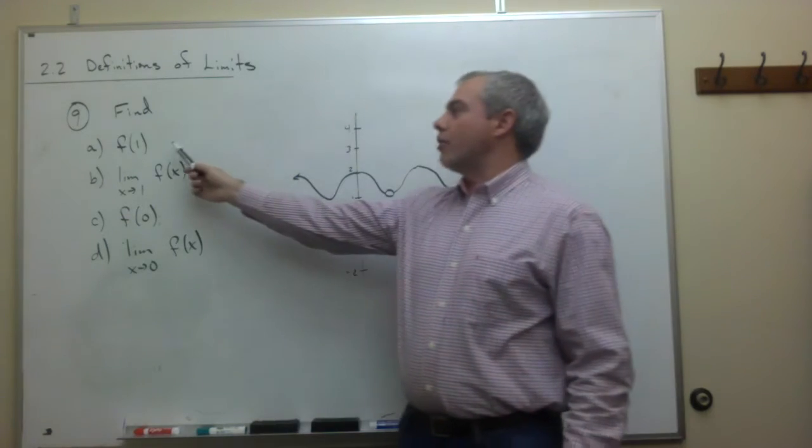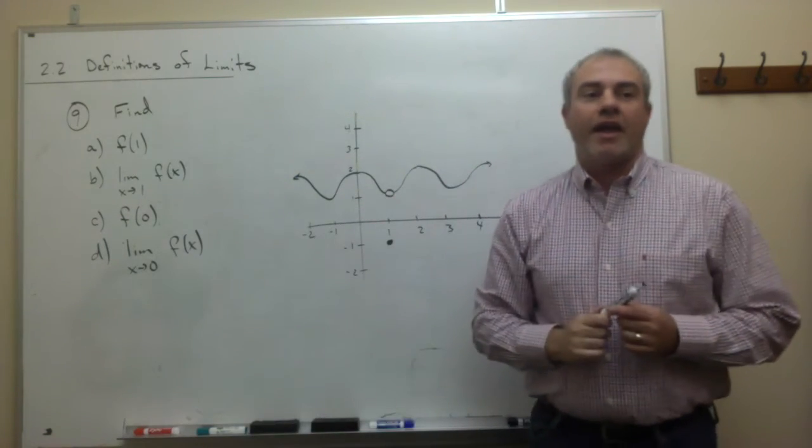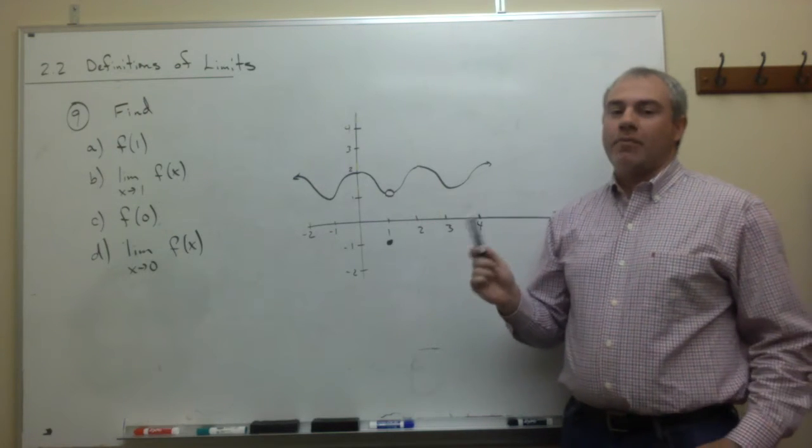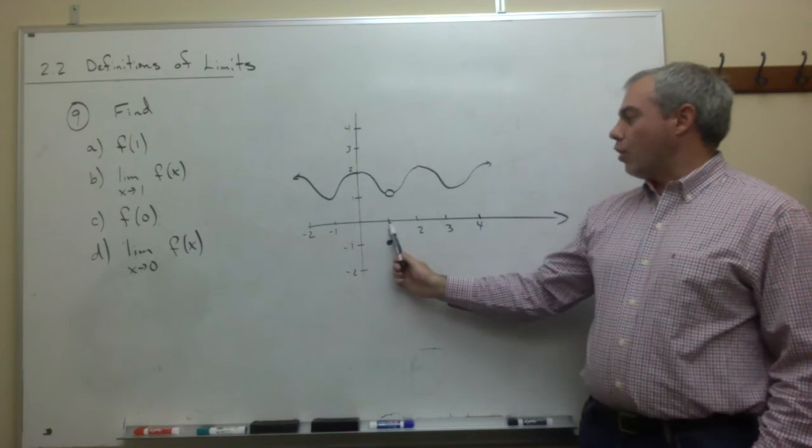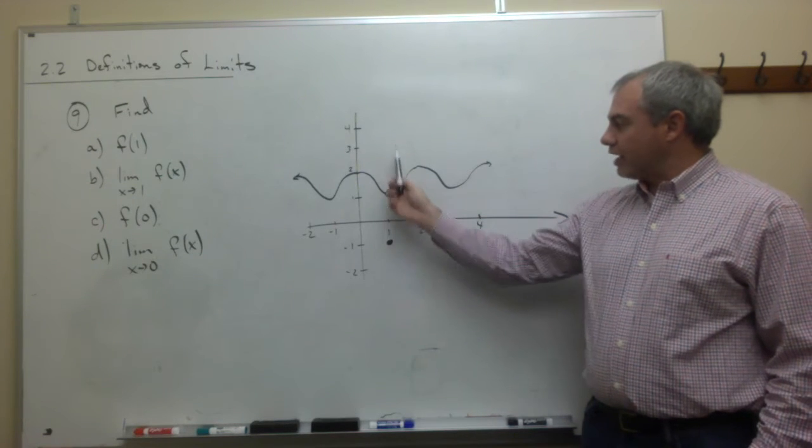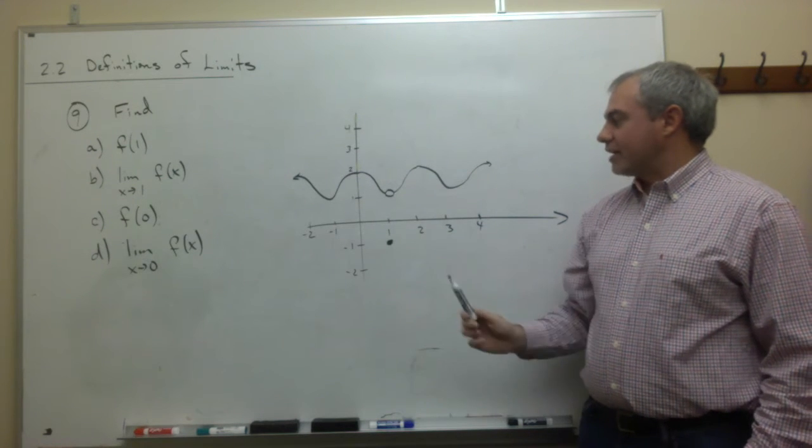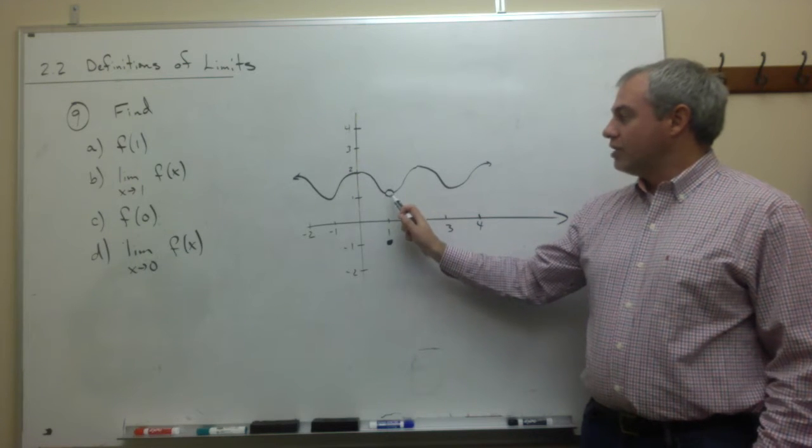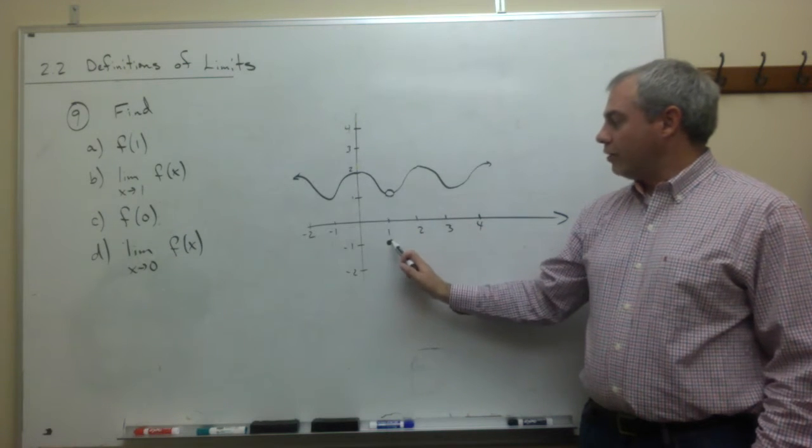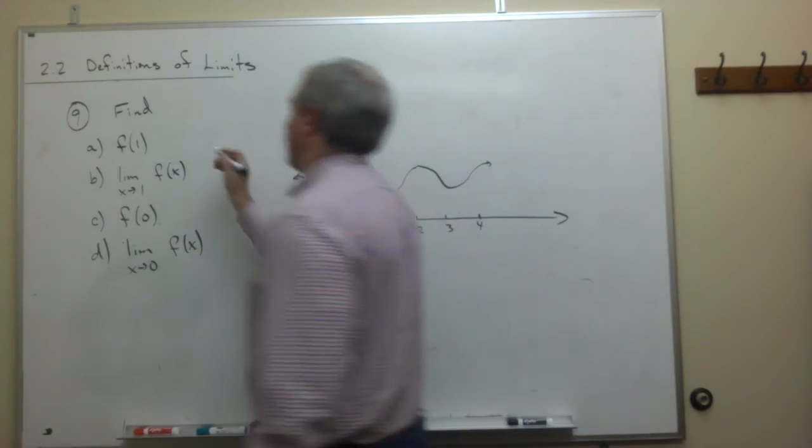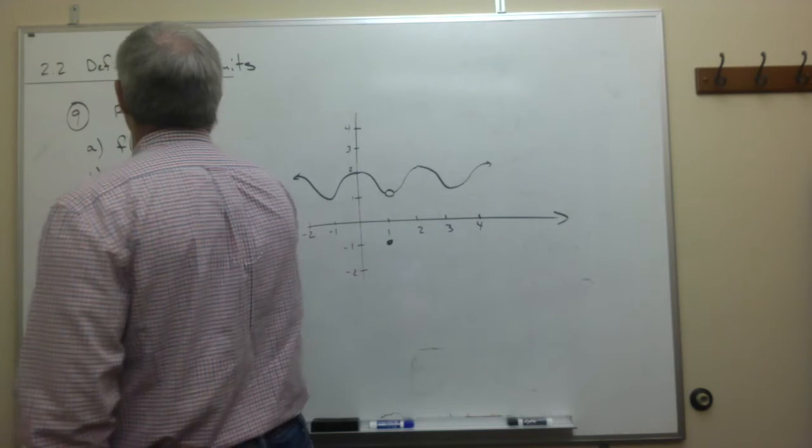First, let's take a look at part A. What's f of 1? f of 1 is asking us what is the point directly above or below the x value 1. Here's the x value 1, and we're saying, is there a point directly above or below the x value 1? There's nothing here. This is an open hole, so there's nothing above. Below, there is a point. It's at negative 1, so f of 1 is negative 1.